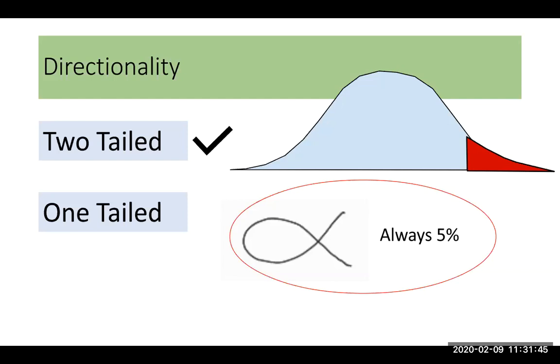then you really should make sure that you keep it a two-tailed test. You're always going to keep it 5%, but if it's two-tailed, it's split evenly between the two sides. If it's one-tailed, it's all the way on one side or the other.